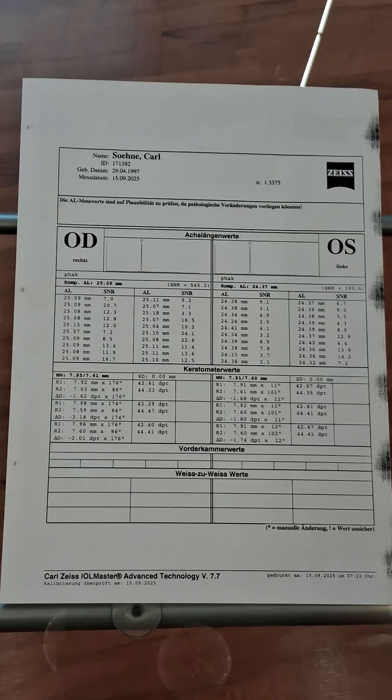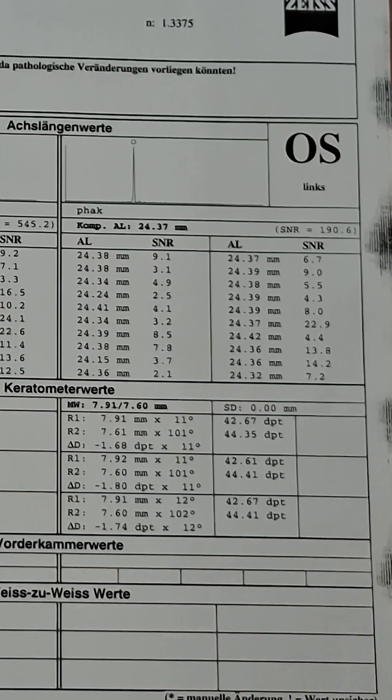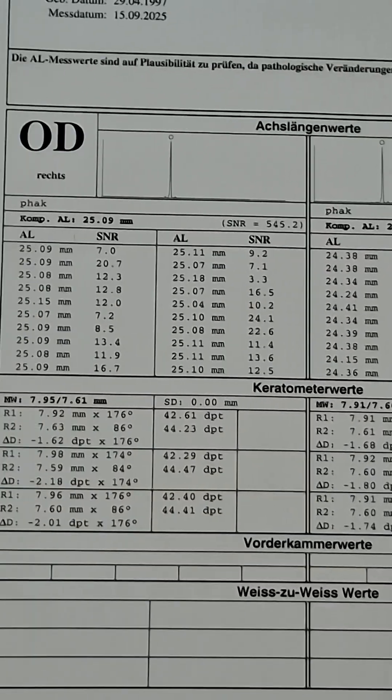Monday morning of the days documented, I went to the eye doctor to make a precise eye length measurement. The left eye was measured shorter than the right eye. This makes perfectly sense because I'm more myopic on the right eye than the left eye.